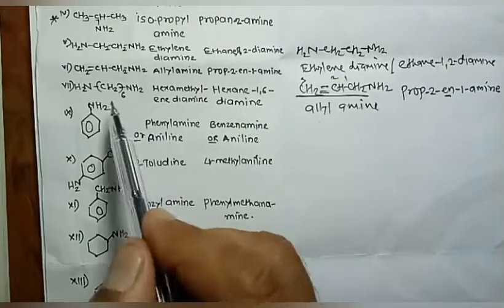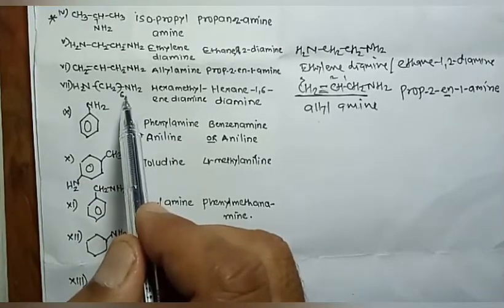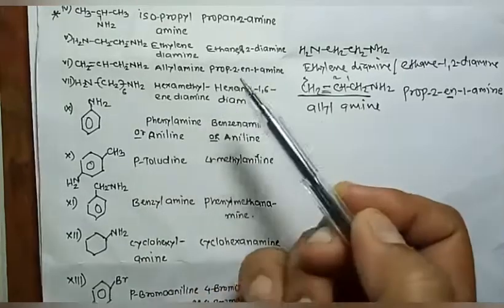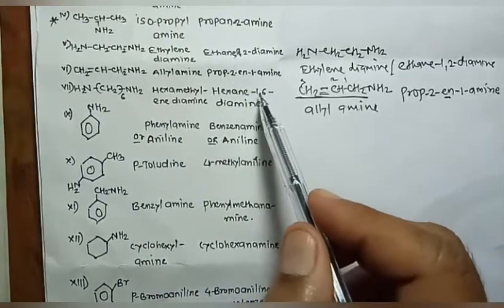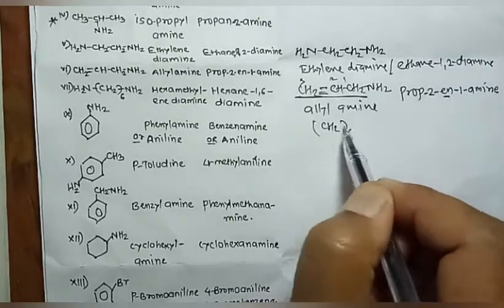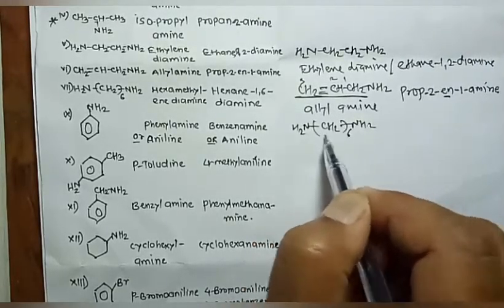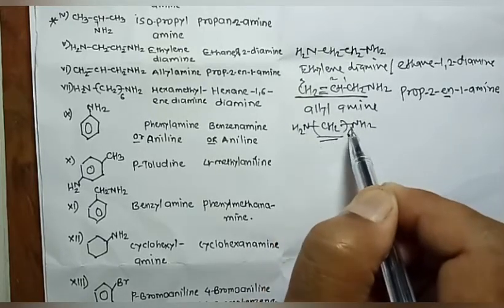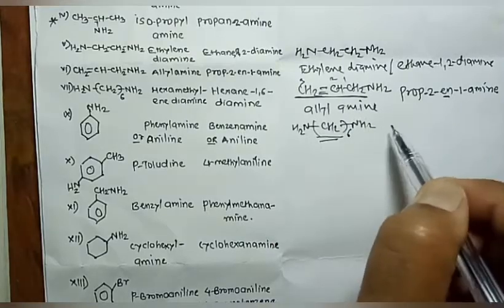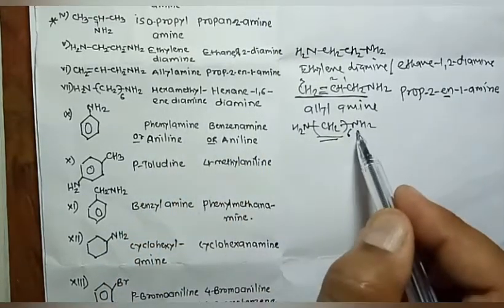Another example: NH₂(CH₂)₆NH₂ has two amino groups on C1 and C6 of a six-carbon chain. The common name is 'hexamethylenediamine' and the IUPAC name is 'hexane-1,6-diamine'.